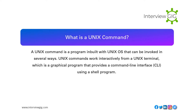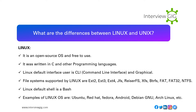What are the differences between Linux and Unix? Linux: it is an open source OS and free to use. It was written in C and other programming languages. The default interface for Linux users is CLI (command line interface). File systems supported by Linux include ext2, ext3,